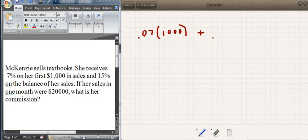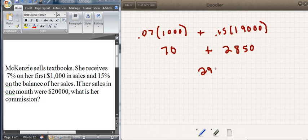So we're going to receive 15% on the $19,000. We just do the calculations and then we just add these, which we'll get $2,920. And that's how much commission McKenzie will make on selling her textbooks.